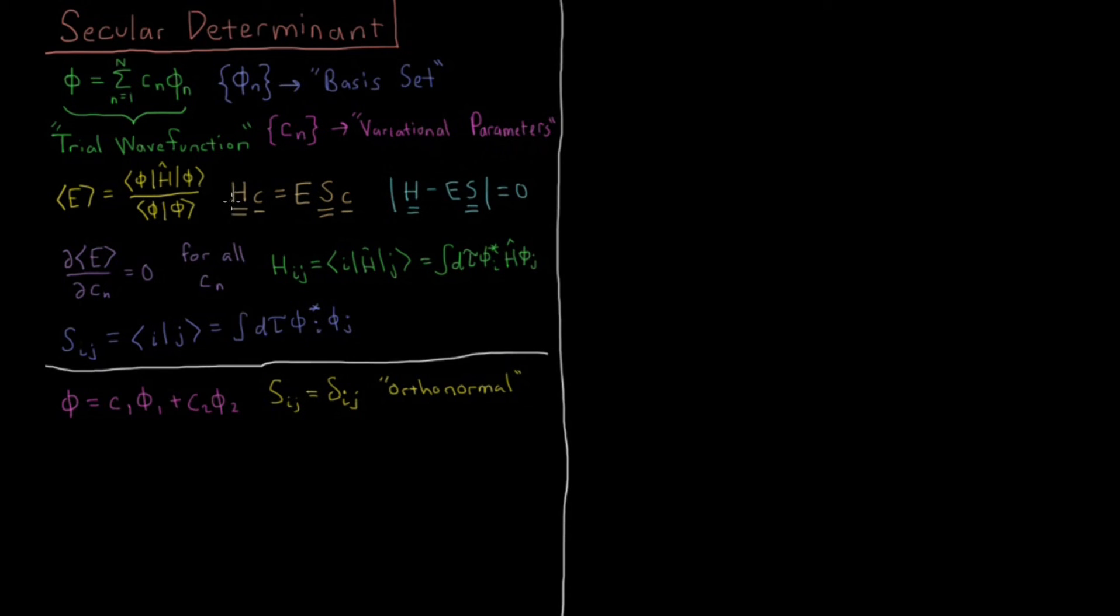And in order for this to have a non-trivial solution, we have to have this secular determinant, this H - ES has to be equal to 0. So this is the determinant of the matrix H minus the energy times the matrix S. We're going to look at what equations we can derive for the energy based off of having a trial function which is a linear combination of only two basis functions.